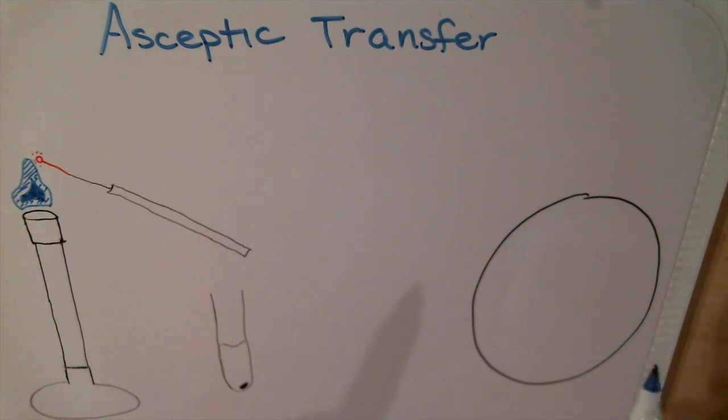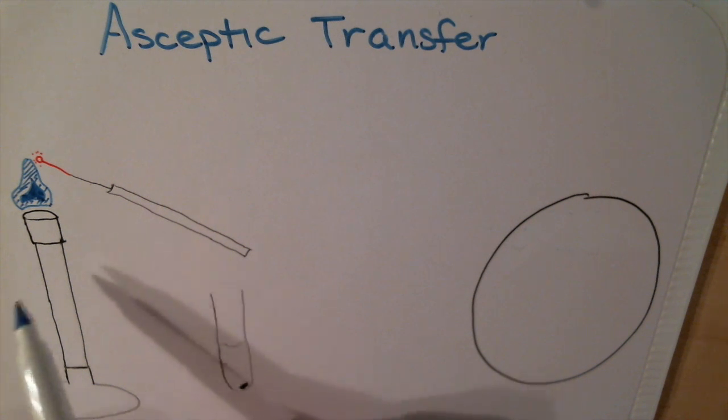When you're doing this, you should always do it within close proximity to the bunsen burner, but not so close that once you're bending over you burn yourself. Please remember that if necessary, you should always turn off your bunsen burner if you have to leave your lab bench. Never leave the bunsen burner unattended.